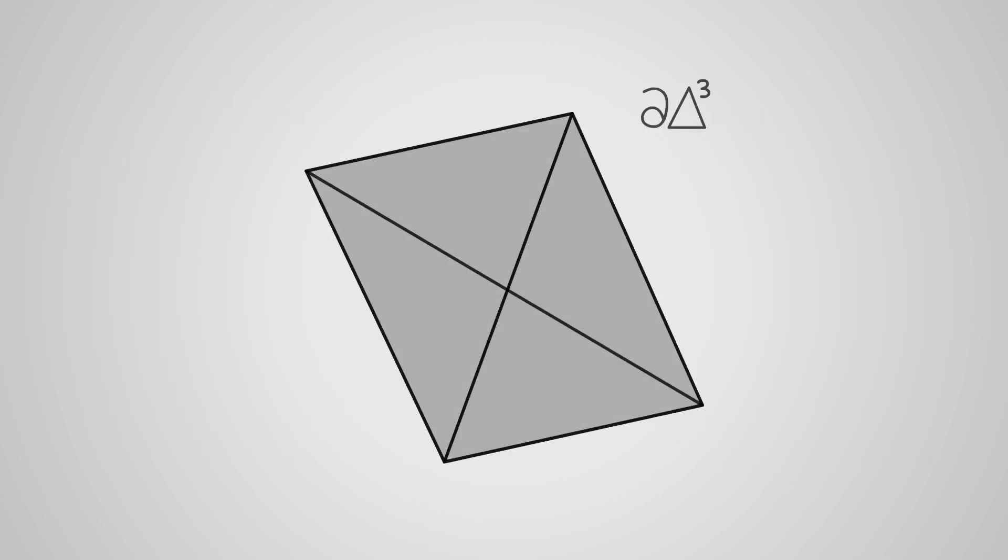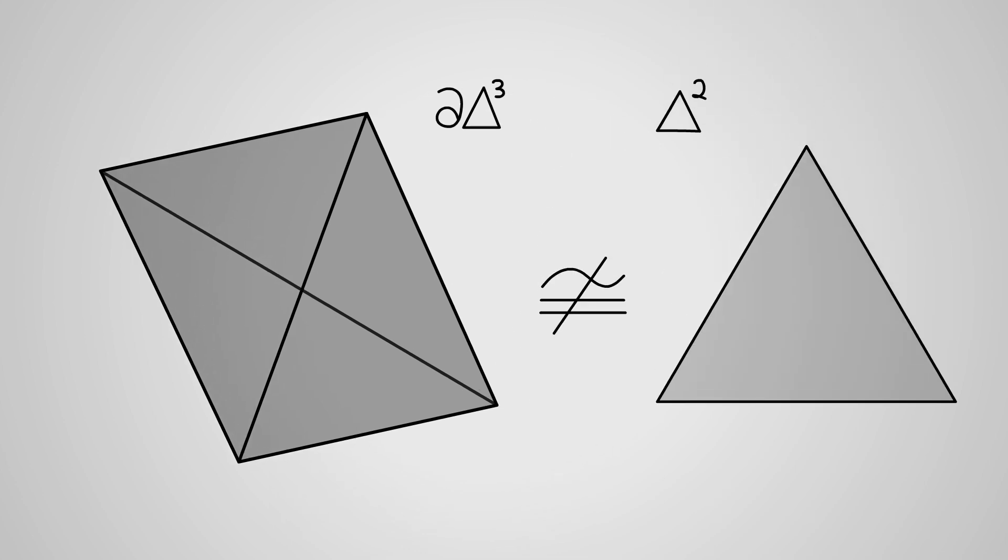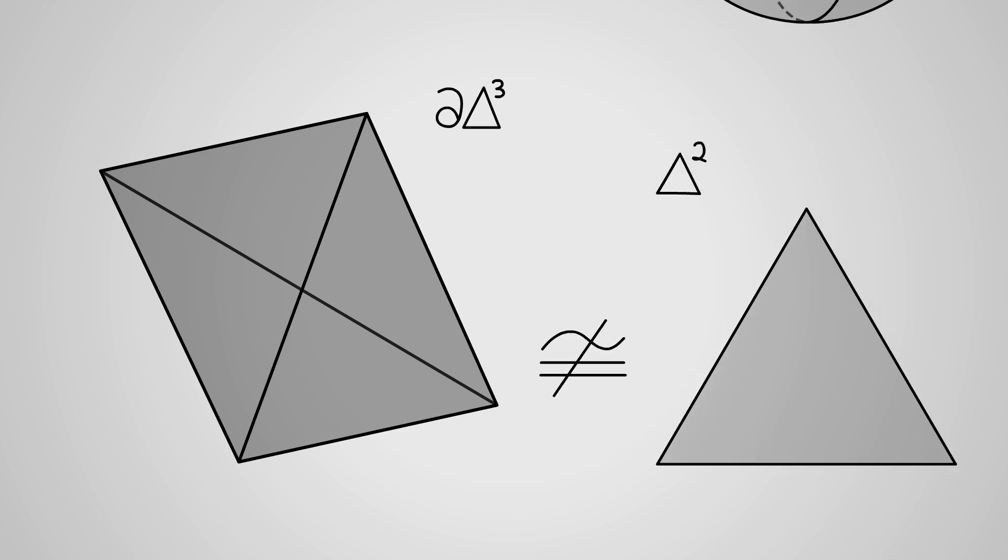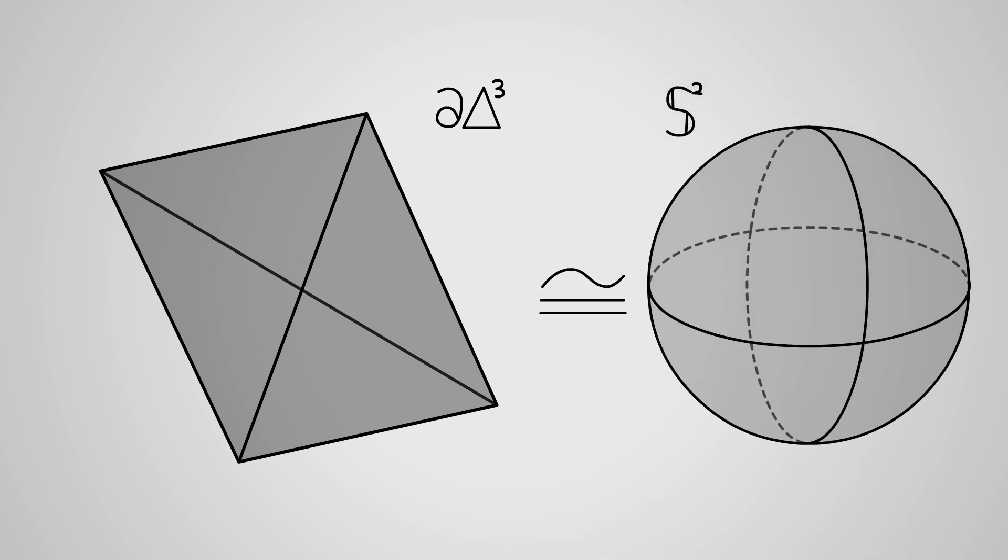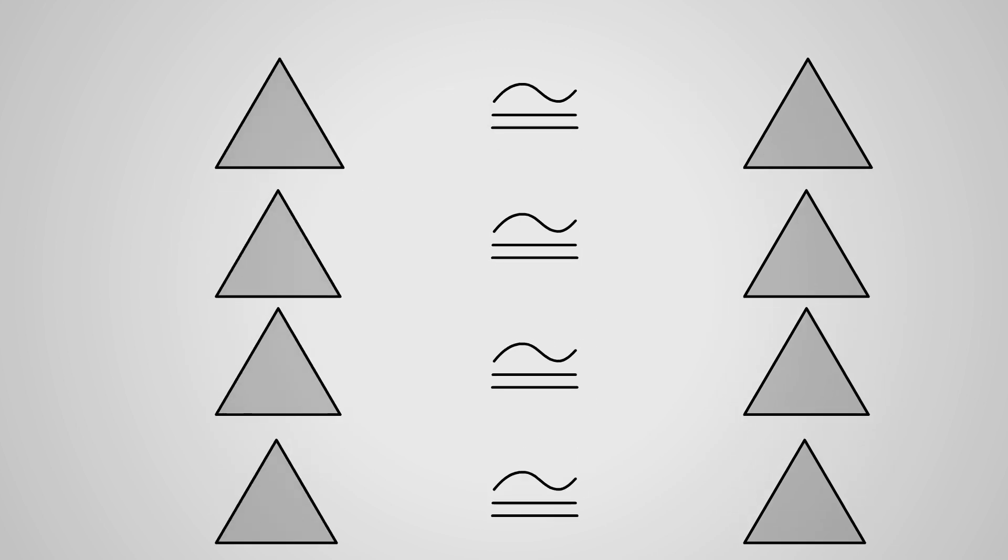Now, the boundary of an n-simplex is not homeomorphic to an n-1 simplex. It too is homeomorphic to an n-1 dimensional sphere. But the point is that it breaks up into n-1 simplices.